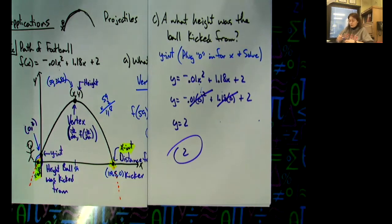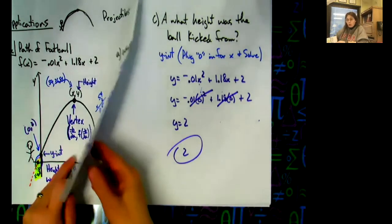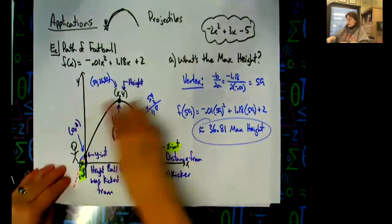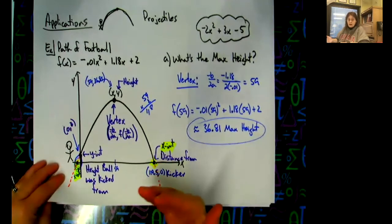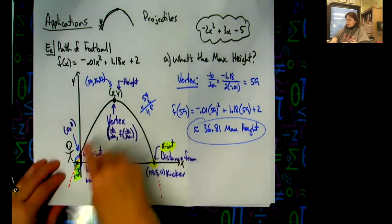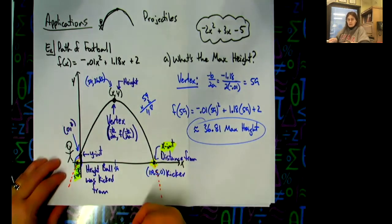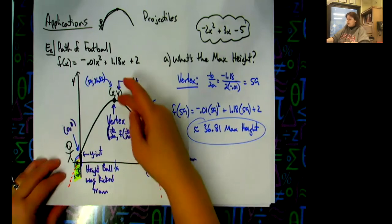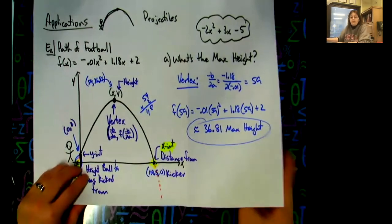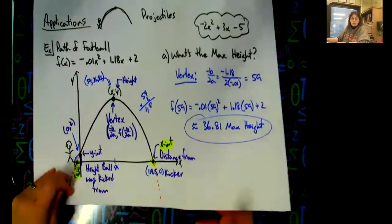Obviously I can't cover every type of story problem, but projectiles are very common with quadratic equations. My recommendation: draw the picture, visualize and annotate what's happening, and then correlate it to what we find in math — y-intercepts, x-intercepts, and vertices with both x and y coordinates. Everything they ask you for is something we know how to find mathematically.